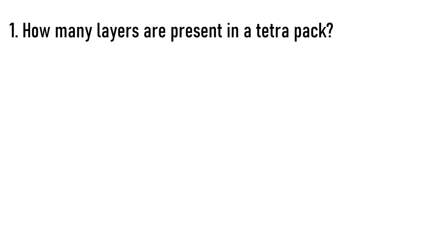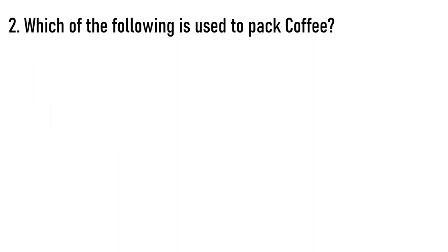Question: How many layers are present in a tetra pack? Options are 4, 5, 6, or 7. The correct answer is option C — 6. There are 6 layers present in a tetra pack.